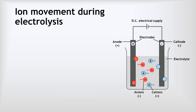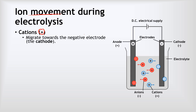Now we need to understand how electrolysis actually enables ionic compounds to break down by thinking about how the ions move. Let's look at the cations — those are our positive ions. The cations migrate, which is a fancy word for move, towards the negative electrode, which is the cathode. To remember that, we put the two C's together: the cations move towards the cathode. We can see this happening — the positive cation moves towards the cathode because opposite charges attract.